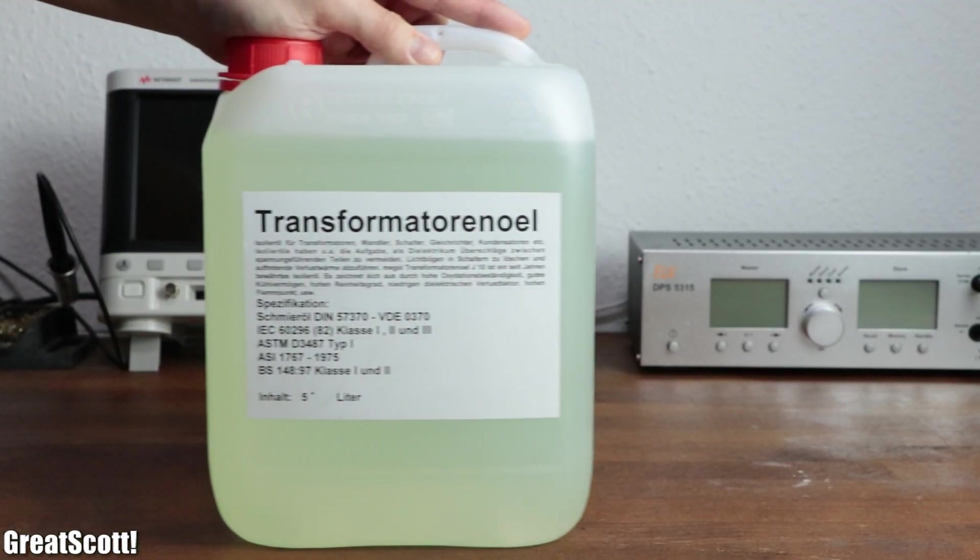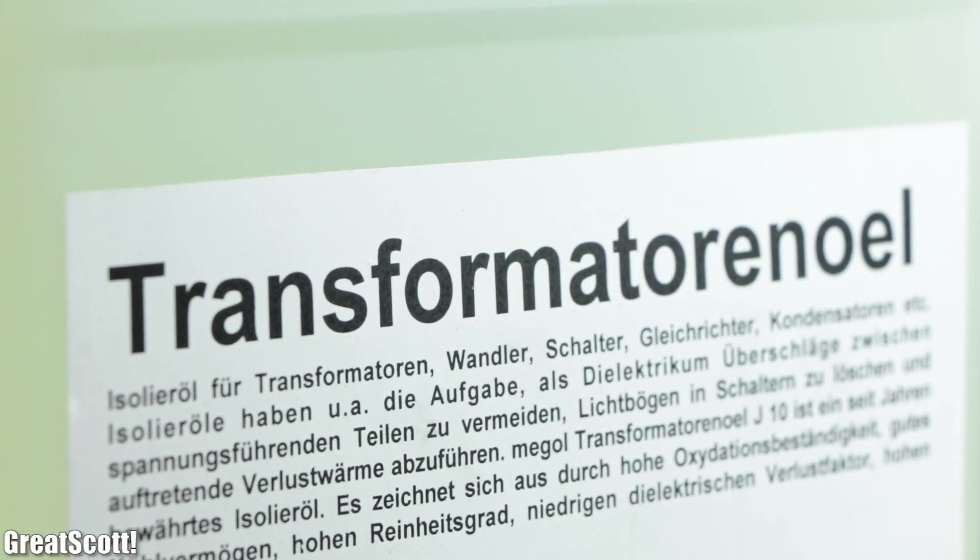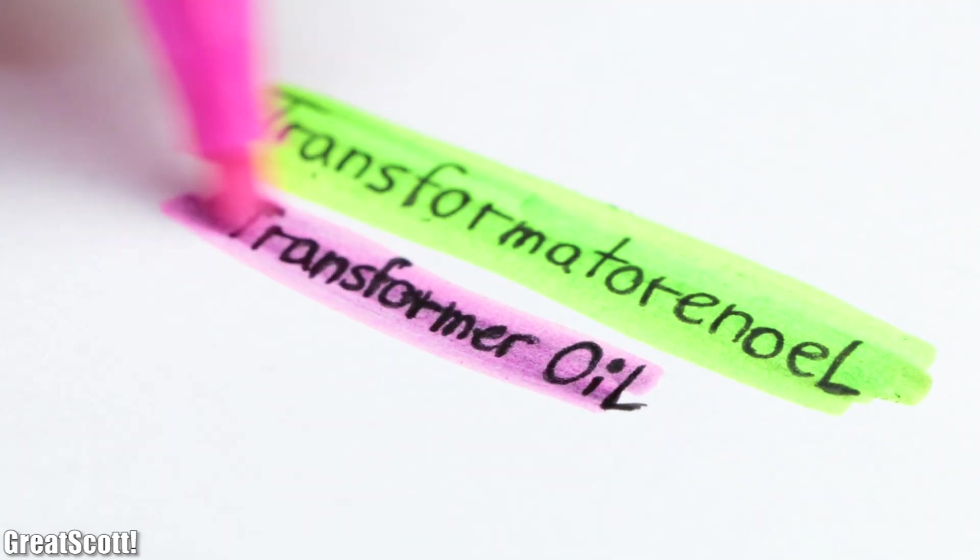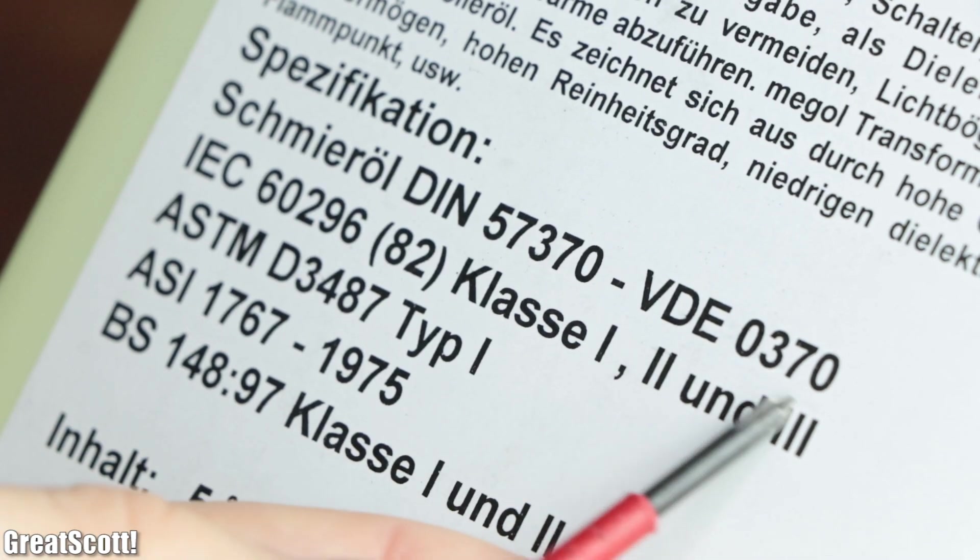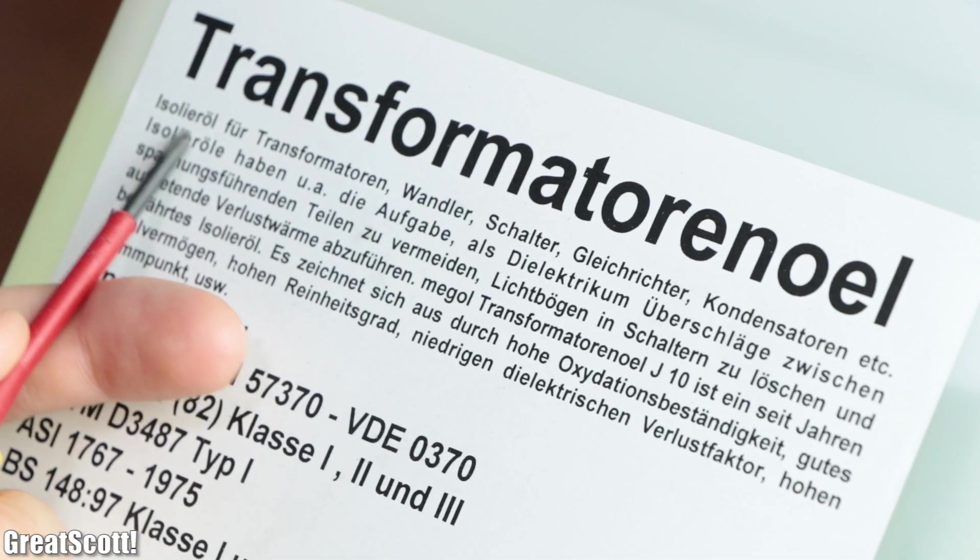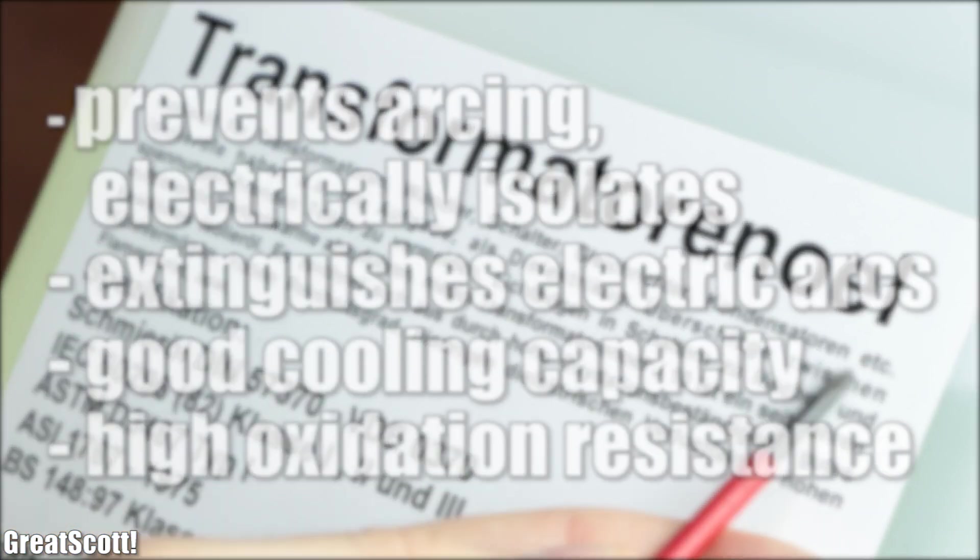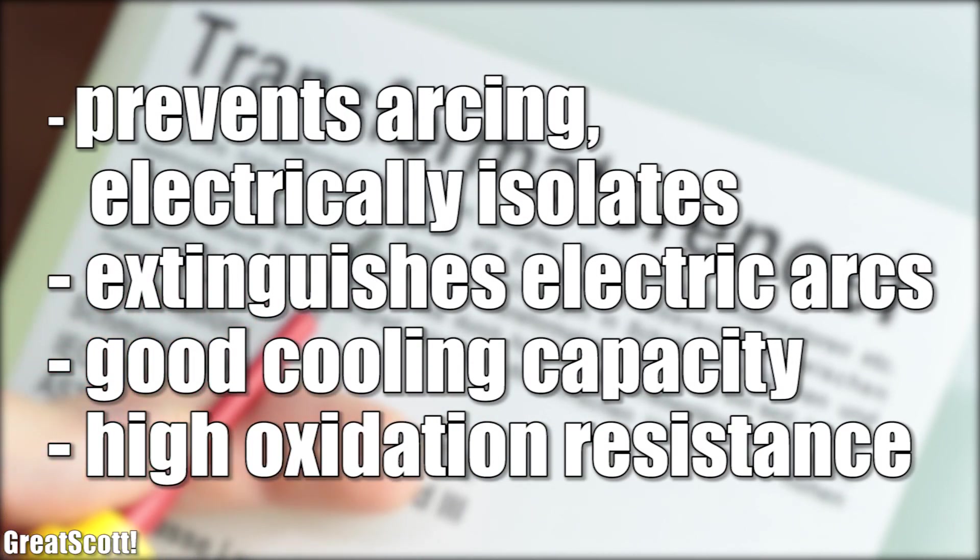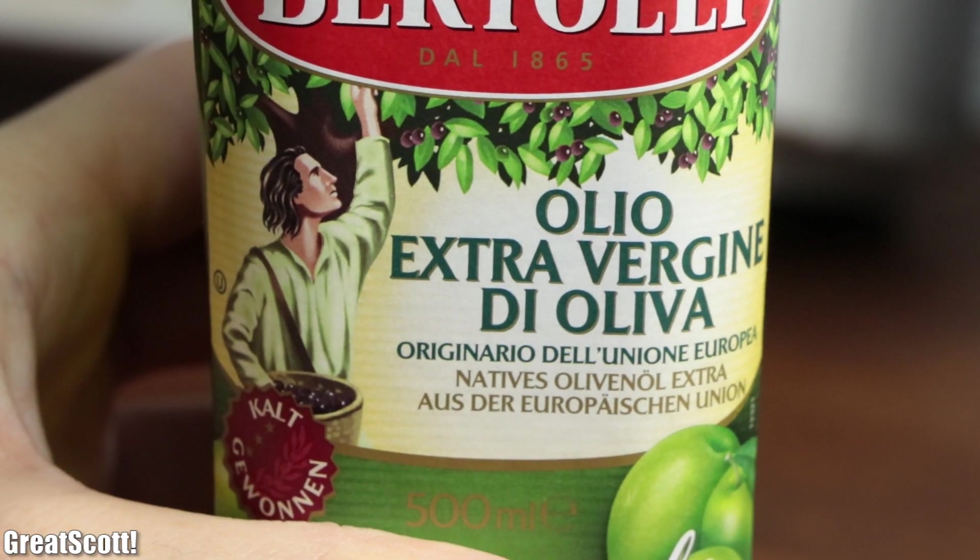But thankfully though, there exist more specialized types of oil, like this Transformer Oil. Not only is it conformed with a couple of important guidelines, but its German description text also sounds promising. Which in a nutshell states that it prevents arcing, so it electrically isolates, extinguishes electric arcs, offers a good cooling capacity, and a high oxidation resistance, which is the big problem that comes with every cooking oil.